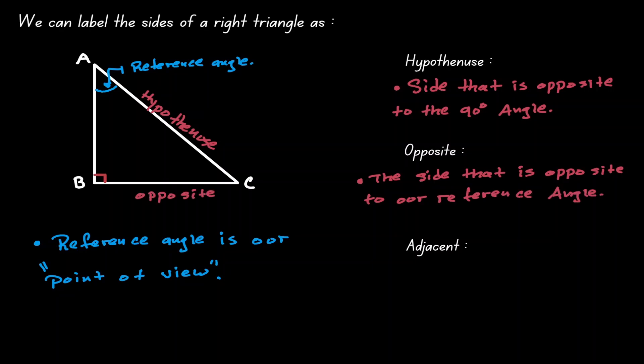And the adjacent is the side that we have not labeled, which will always be the side that is right next to the reference angle. Adjacent means next to.